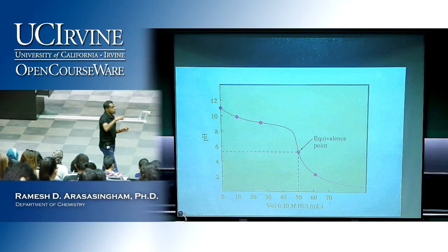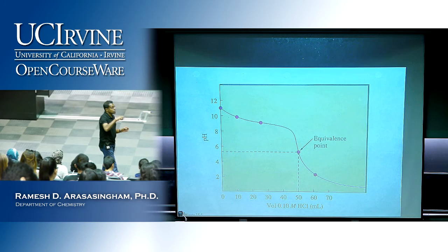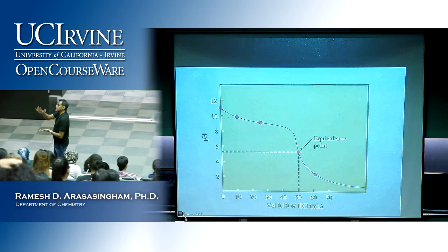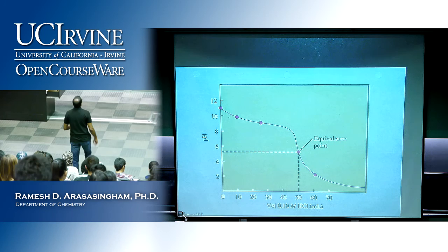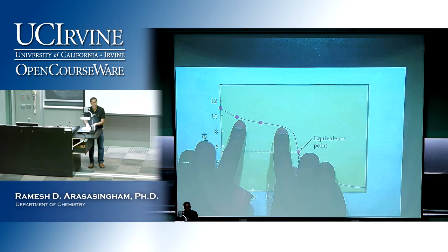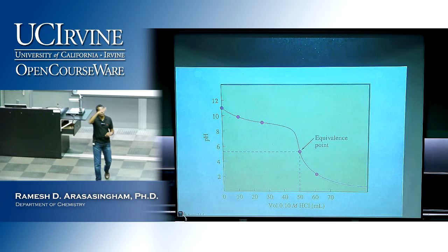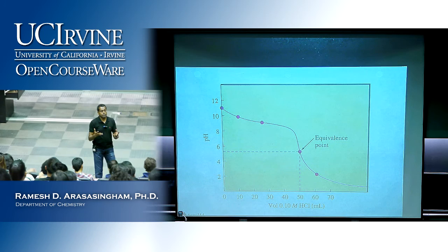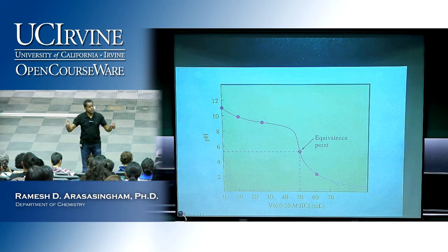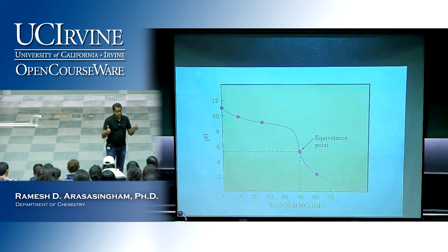As you add a strong acid, you're neutralizing the weak base and converting it to NH₄⁺, which is a weak acid, so the pH is going to go down. But in this region, this is the buffer region — it flattens out and plateaus because in that solution you have NH₃ (the weak base) and NH₄⁺ (its conjugate acid) in substantial amounts. So in that region, it acts as a buffer.